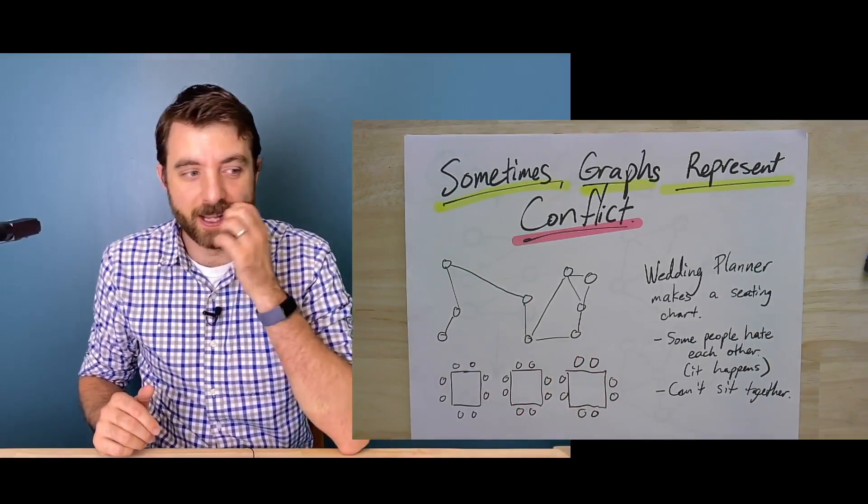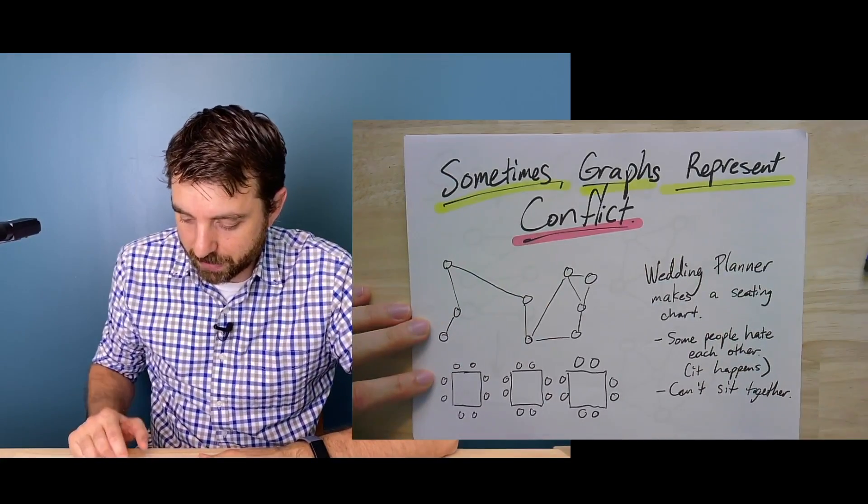But graphs show up in all kinds of other settings where you might not have immediately thought of them as graphs. Imagine you are a wedding planner trying to make a seating chart. This is a hard task — you'll hear stories about people fighting over seating charts. Part of the reason it's hard is that some people just can't sit near each other. If you draw a graph where edges represent a conflict — that is, those people can't sit next to each other — that gives you a graph.